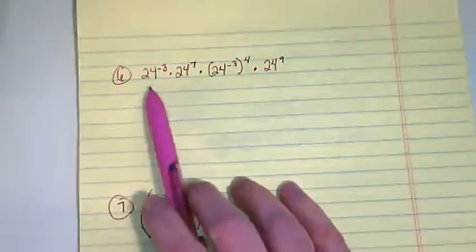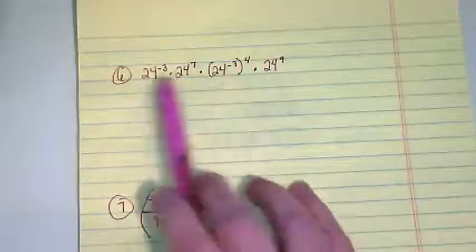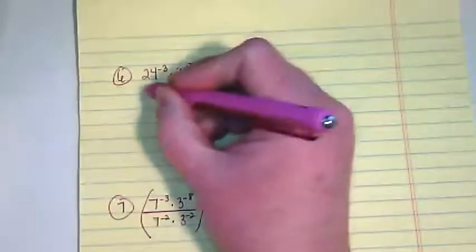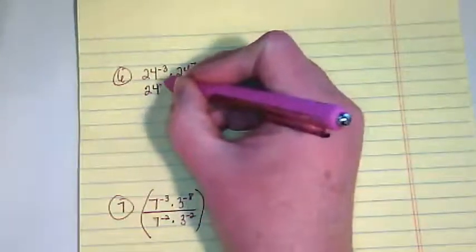Okay, so for number six, when I look at this they all have the same base. So what I'm going to do is simplify the exponents because the basis will stay the same. So this would be rewritten as 24 to the negative 3 times 24 to the 7.